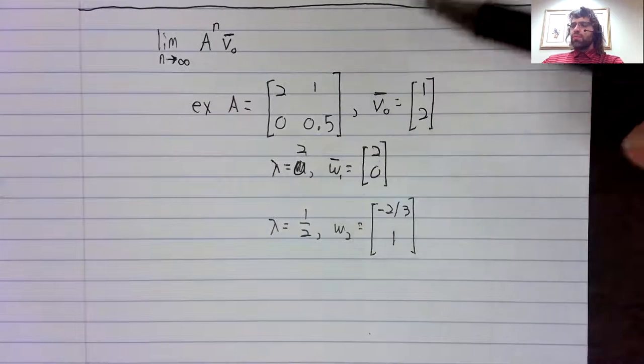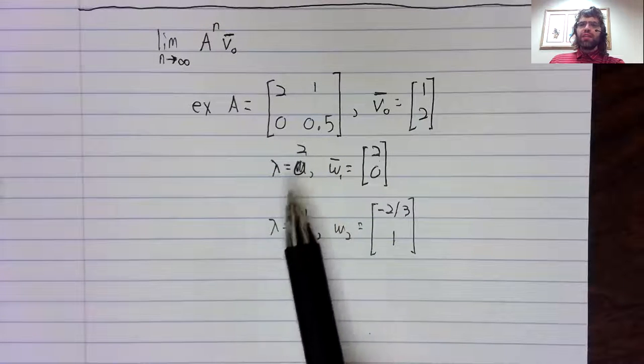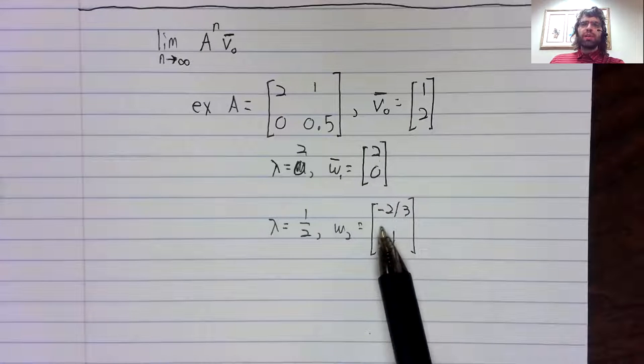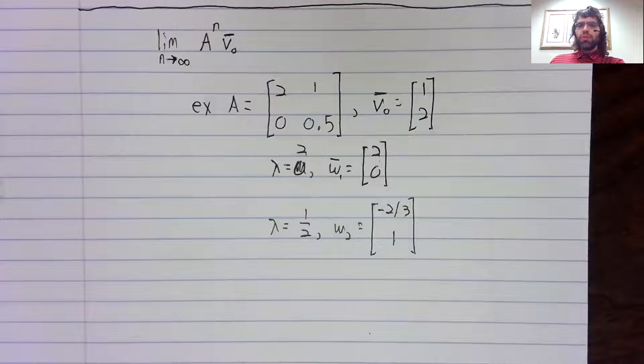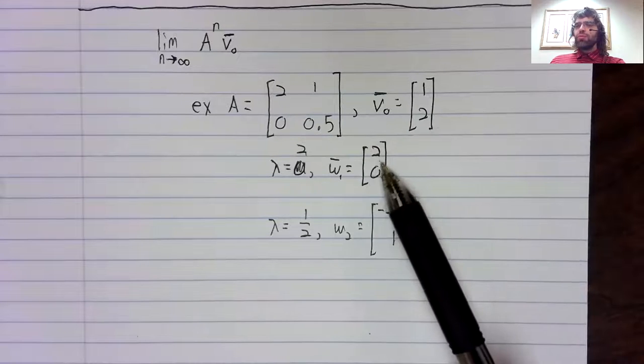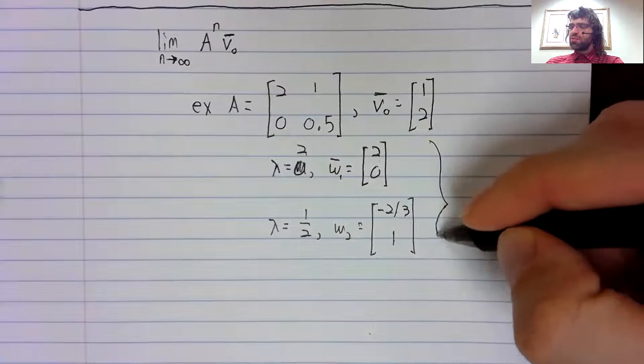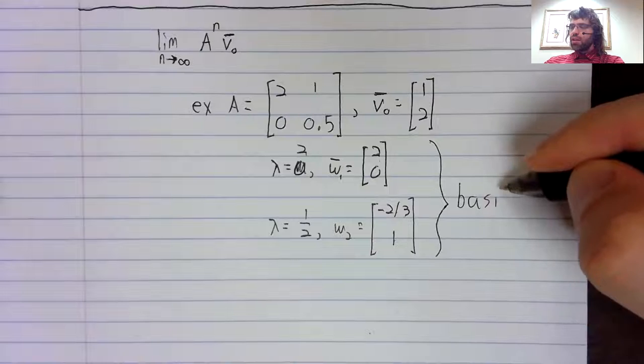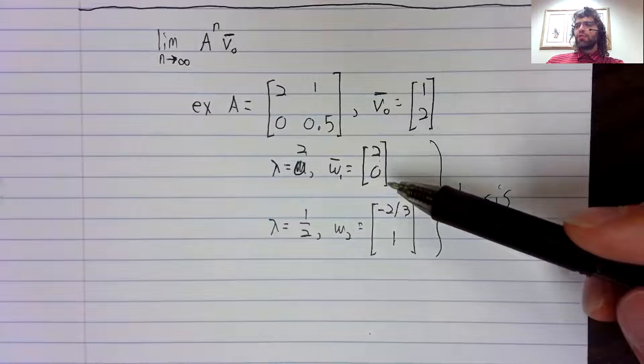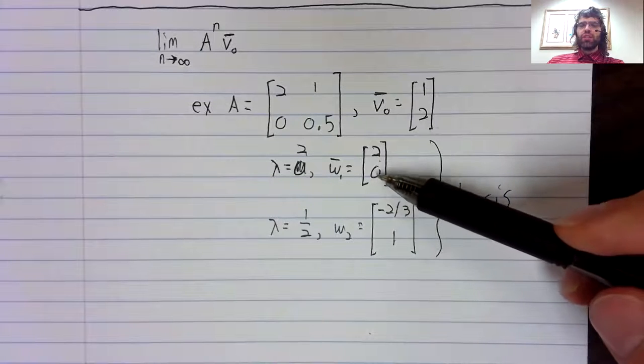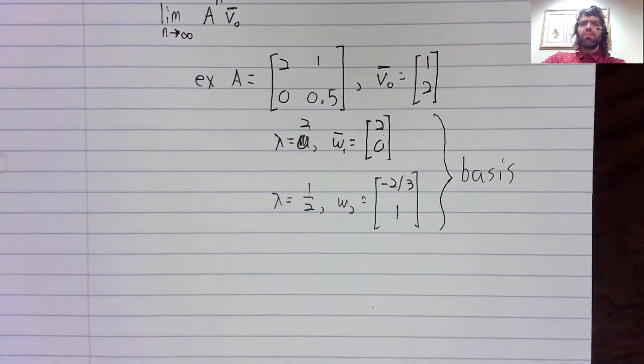Now, linearly different eigenvalues give linearly independent eigenvectors. R2 is two-dimensional. If we have two linearly independent vectors in a two-dimensional space, that's a basis. So any vector in R2 can be written as a linear combination of these eigenvectors, including V_0.